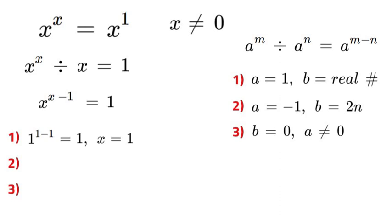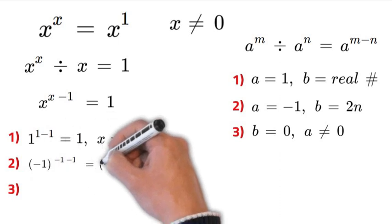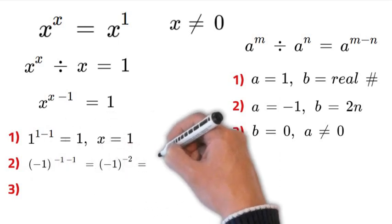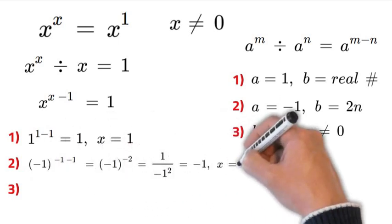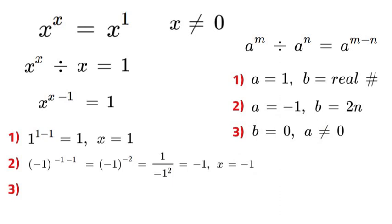The next one is where our base is negative 1. Negative 1 to the power of negative 1 minus 1 is equal to negative 1 to the power of negative 2, which is equal to 1 over negative 1 squared, which is equal to negative 1. And therefore x is equal to negative 1.